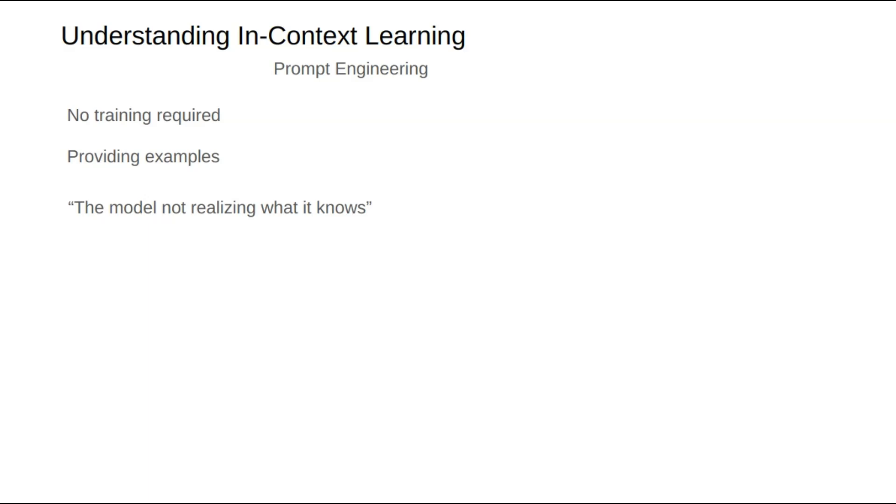For example, if we want the model to perform sentiment analysis, we aim to classify a text, such as a user review, as positive or negative. When training a base model, we typically feed it a large amount of text for comprehension. However, we don't specify this particular task during training.